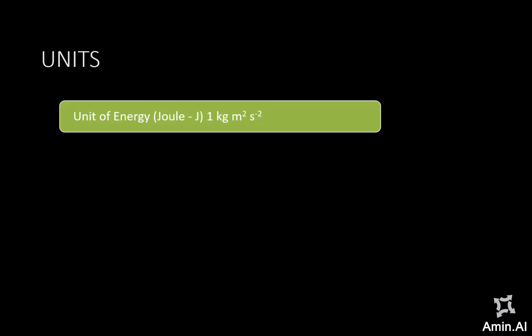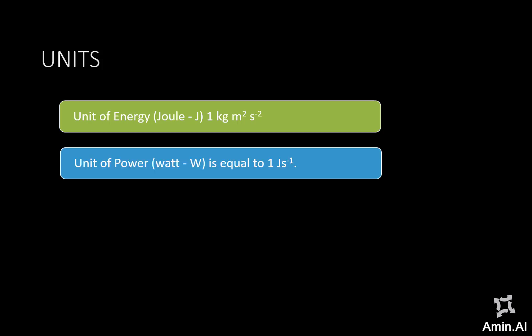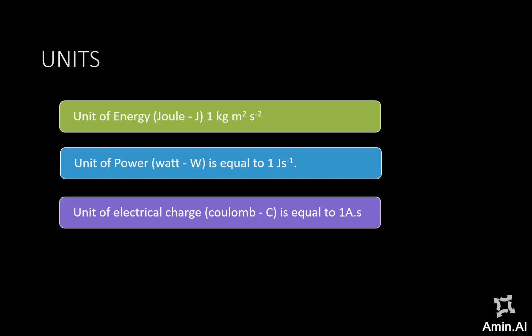For example, the unit of energy is the Joule, and Joule is 1 kilogram meter squared per second squared. The unit of power is the Watt, indicated by W, and is equal to 1 Joule per second. The unit of electric charge is the Coulomb, and it is the quantity of charge transported by a current of 1 ampere flowing for 1 second.